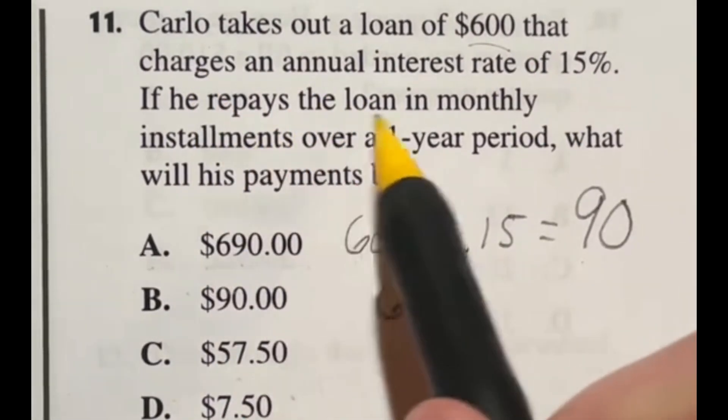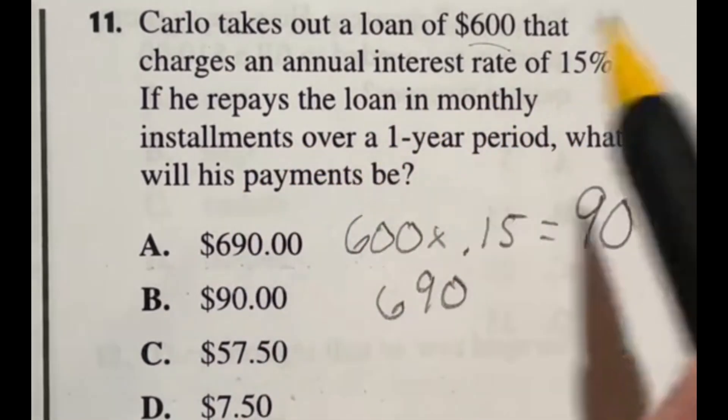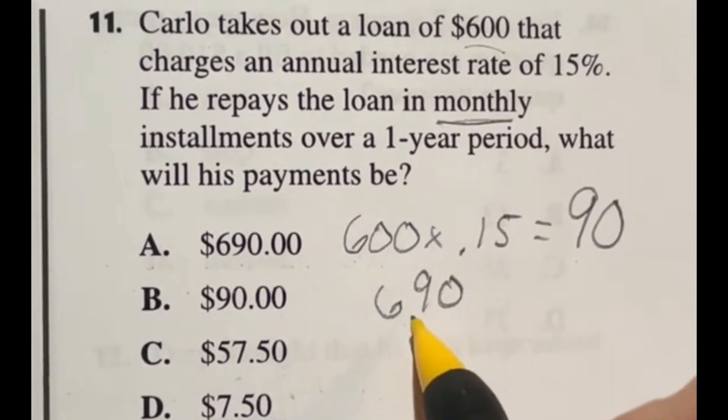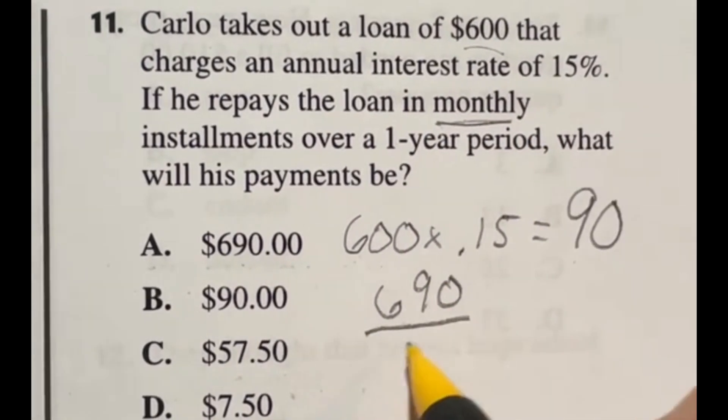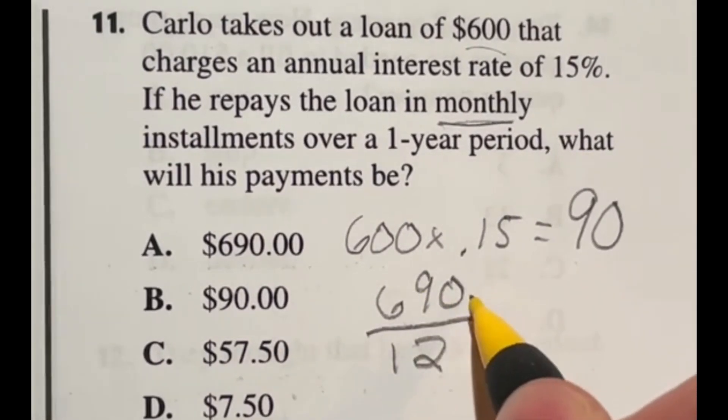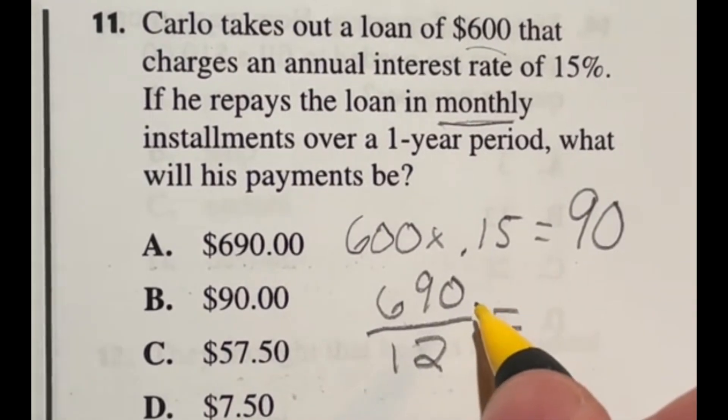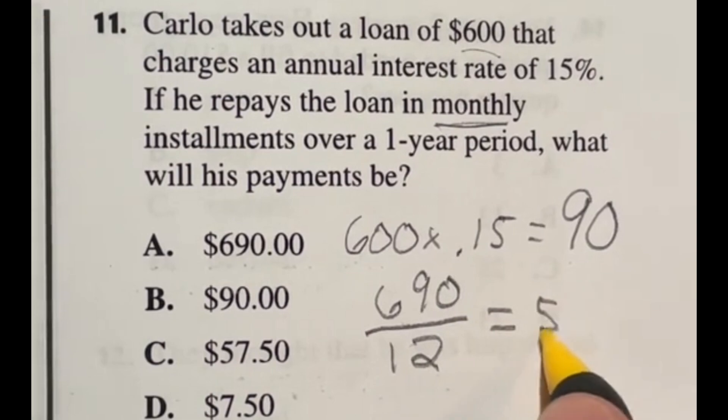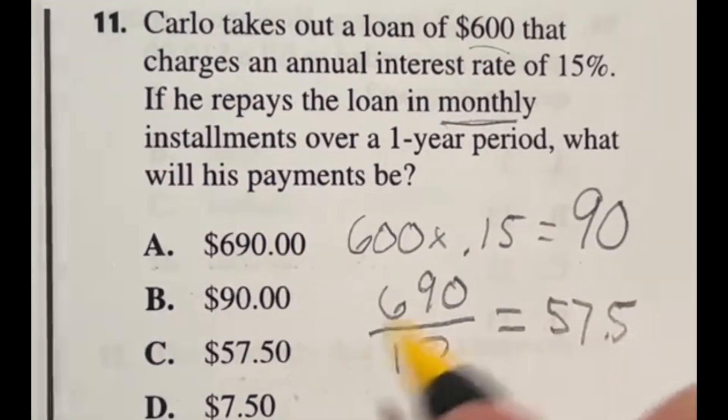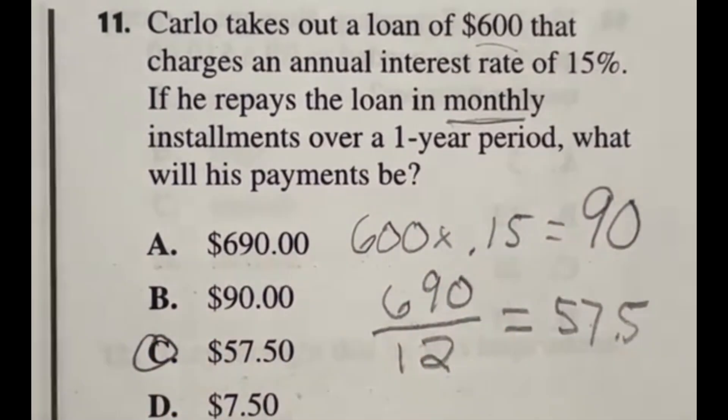So the total amount being paid is $690 for the whole year. It says if he repays the loan in monthly installments over a one-year period what would his payments be? Because this is monthly, we're breaking this up into 12 pieces. So we're going to divide 690 by 12, which gives you a little under $60, about $57.50. Looking through the options that is one of our answers. So every month he's going to be paying $57.50.